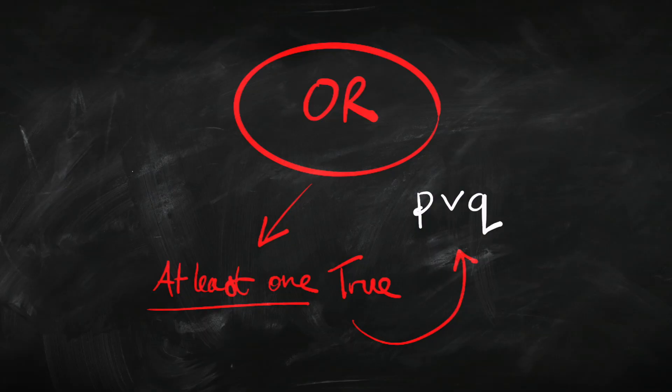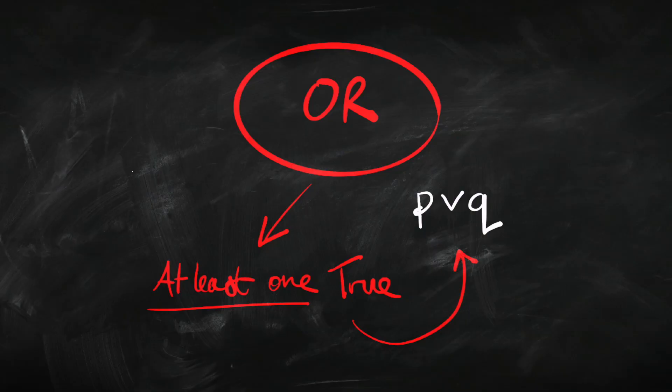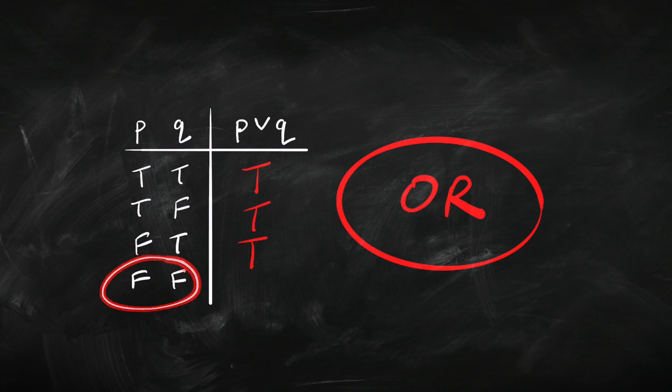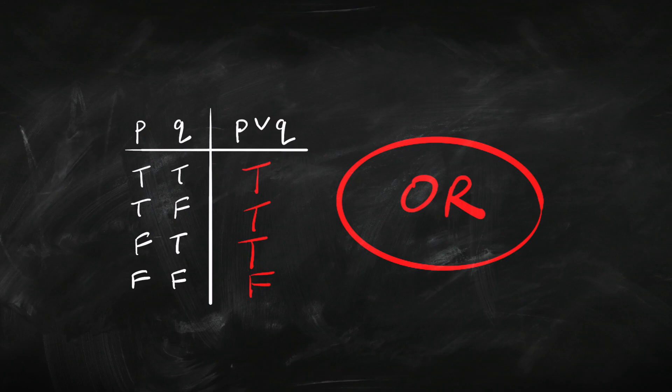Now let's look at or — disjunction. Think about the meaning of or: it basically means that at least one of them is true. Either P is true or Q is true, or both are true. So looking at the truth table, when at least one of them is true, P-or-Q is true. The only way it can be false is when they're both false. So the truth table for or goes: T, T, T, F.